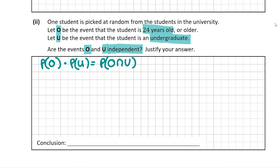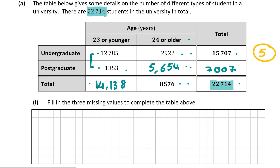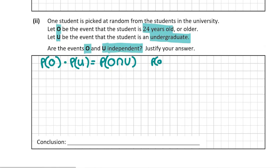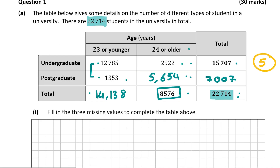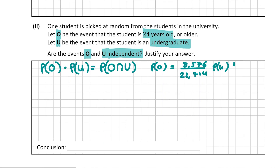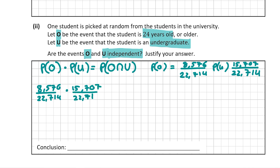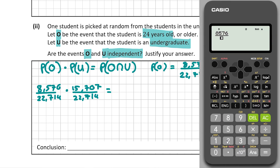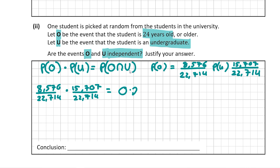Let's work out P(O): the probability that the student is 24 years old or older. The total number of students who are 24 or older is 8,576, over the total of 22,714. For P(U), the probability that they are an undergraduate, we take the figure 15,707 over 22,714. Multiplying these together — 8,576 over 22,714 multiplied by 15,707 over 22,714 — we get a value of 0.261.